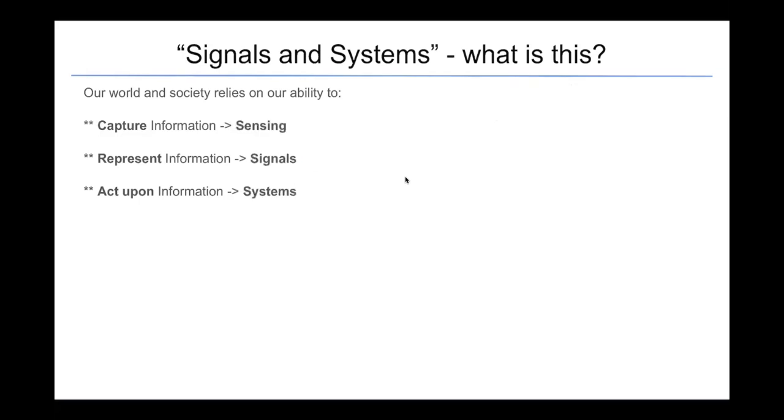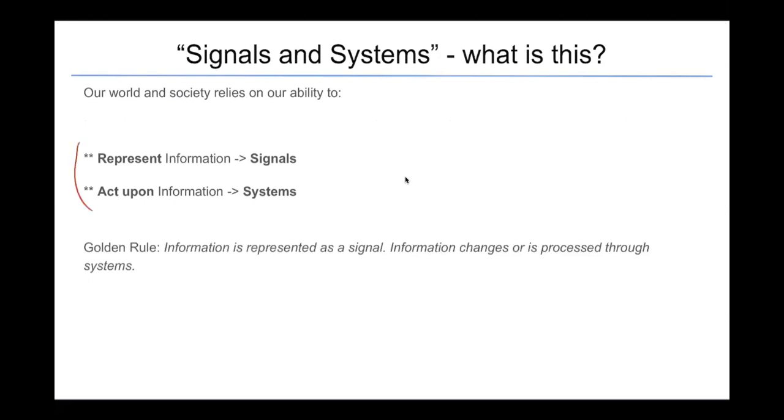So let's break it down one more time. The capture of information is also known as sensing. The representation is known as a signal, and the action is known as a system. I'm going to draw a strikethrough through the capture of information because we're going to learn more about this topic in the other areas of the EE department. In this class, we are therefore primarily concerned with the representation of information as signals and the action upon information as systems, which brings us to the golden rule. Information is a signal. The change in information is due to a system.